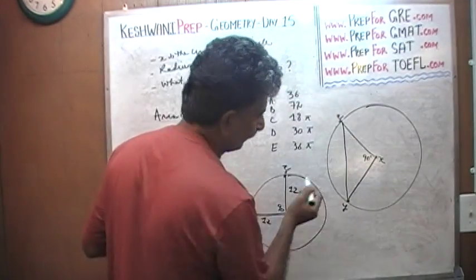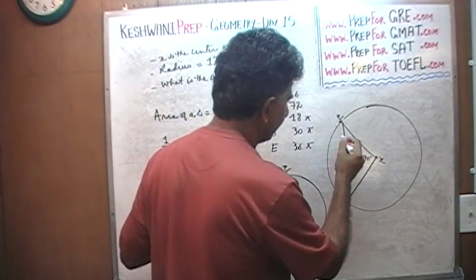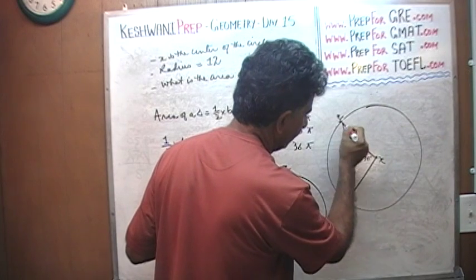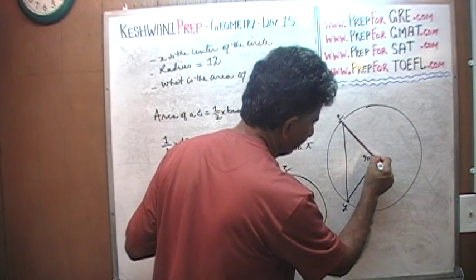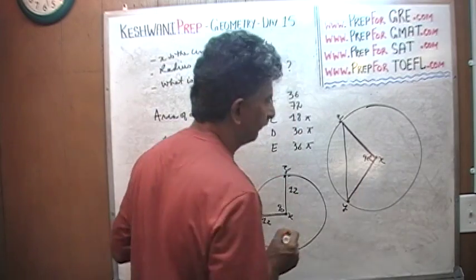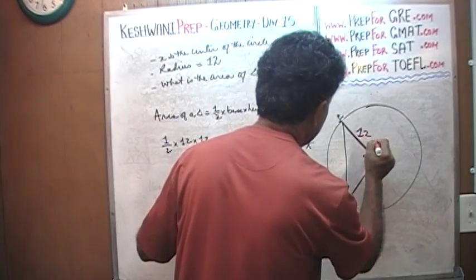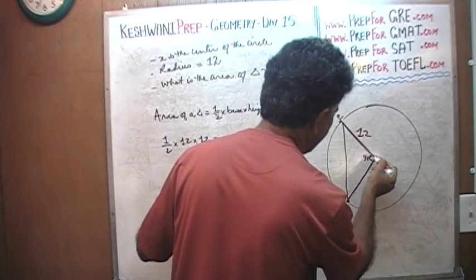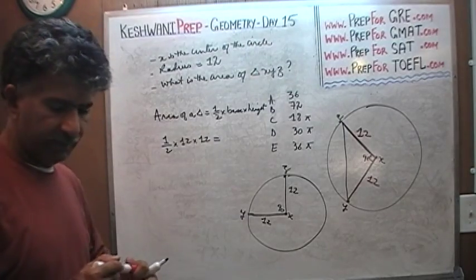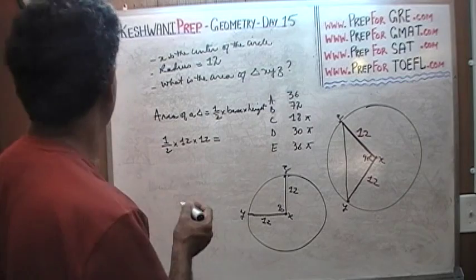Don't worry about this guy. It doesn't matter which one you call base and which one you call height. This is base, this is height, or the other way around, and this is 90 degrees. And we know this is 12, and we know this is 12. One-half base times height. It's just the fact that it is sitting at an odd angle that sort of trips people off. But it's actually a very straightforward problem. Today was problem number seven.